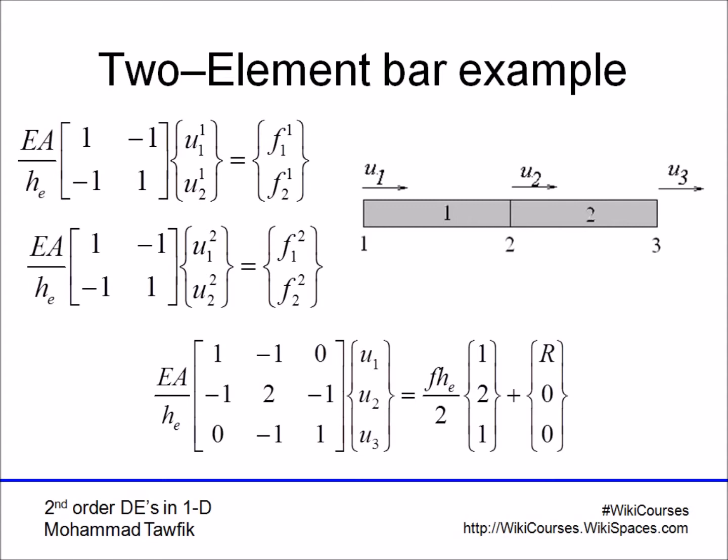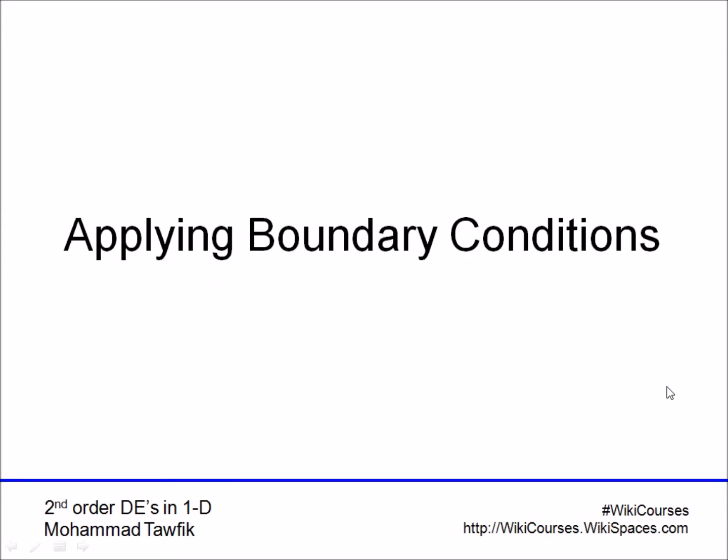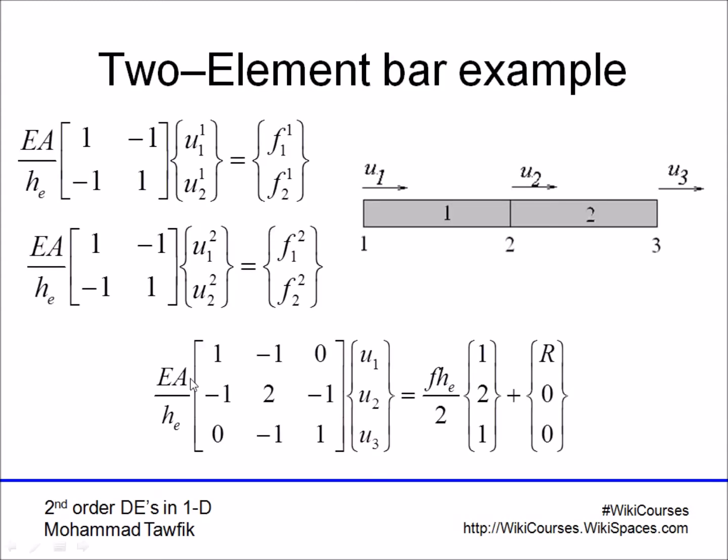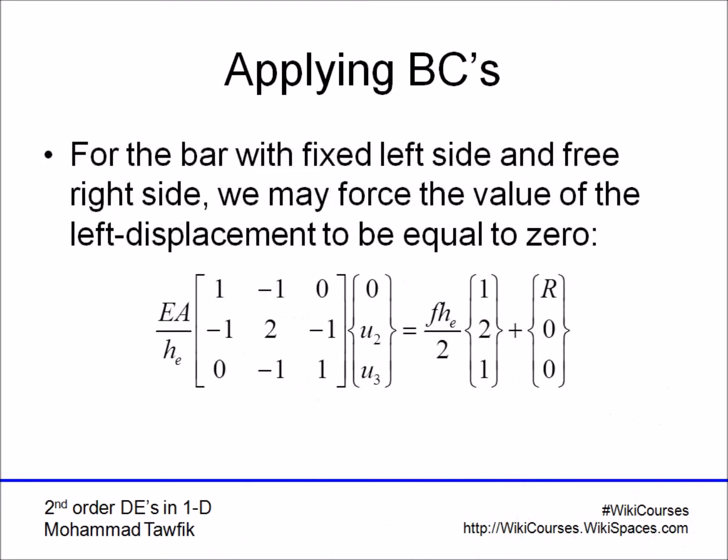The boundary vector q1, q2, q3 will appear to us as just R, where R is the reaction at the fixed side, but there are no other terms here that we can use, so we just substituted by zeros. If we want to solve this equation, unfortunately you'll find that this matrix is a singular matrix. You cannot invert it; the determinant is zero. This is simply because we haven't yet applied the boundary conditions.